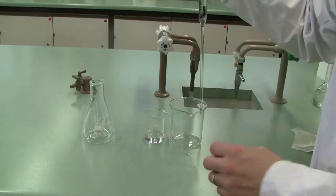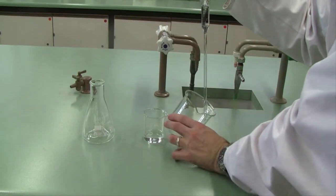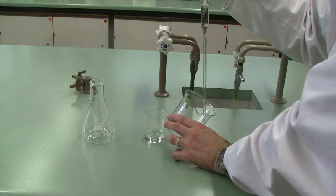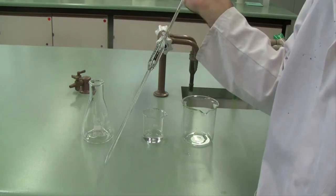Once that's done, you then use a waste beaker, drain back down to the mark. Pick this up so that your eye is level with it so you can see what you're doing. And then once you've got it sitting perfectly on the line, bottom of the meniscus sitting on top of the line, you're then ready to do your delivery.